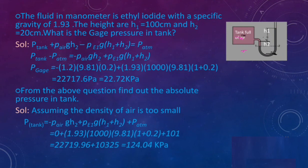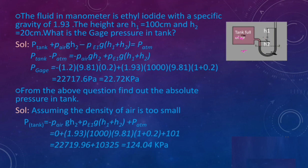Problem 3: The fluid in a manometer is ethyl iodide with specific gravity 1.93. H1 = 100 cm, H2 = 20 cm. Find the gauge pressure in the tank. From the figure: P_tank + ρ_air·g·H2 − ρ_EI·g·(H1 + H2) = P_atm. Therefore, P_gauge = P_tank − P_atm = −ρ_air·g·H2 + ρ_EI·g·(H1 + H2). Substituting the values, the gauge pressure is 22.72 kPa.